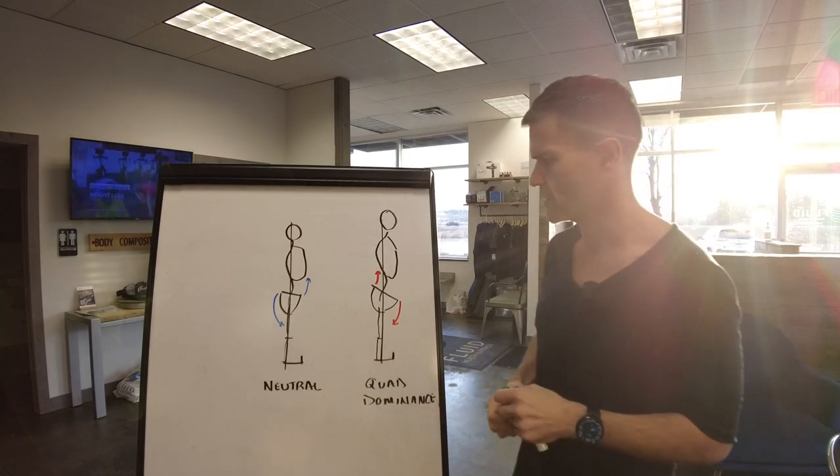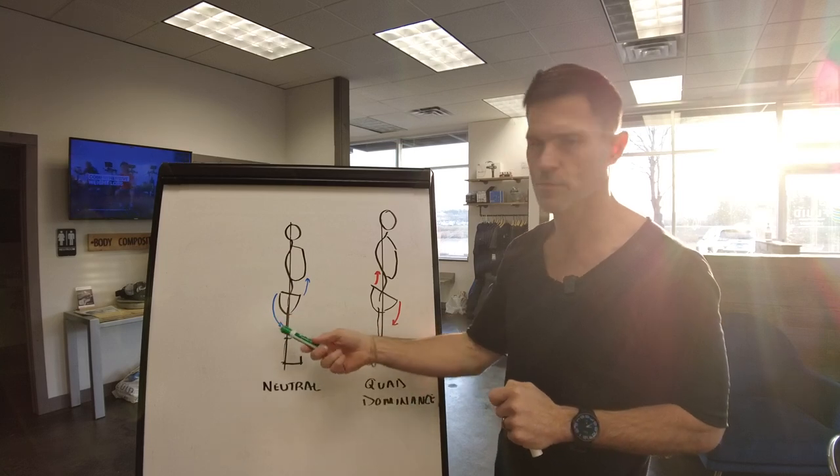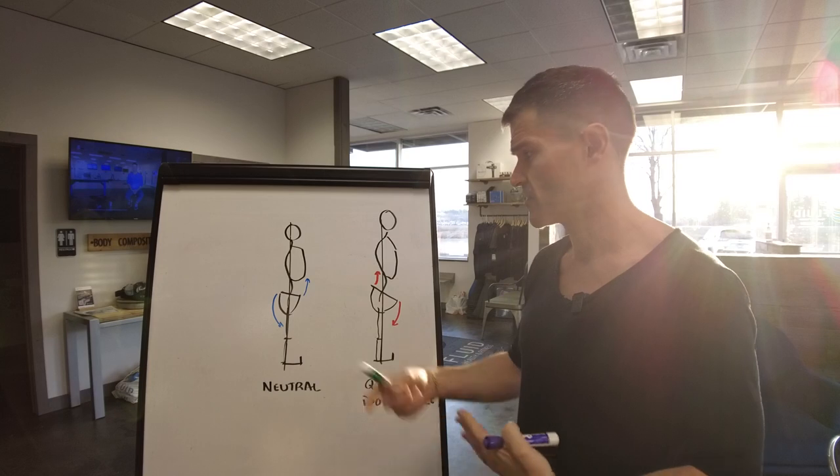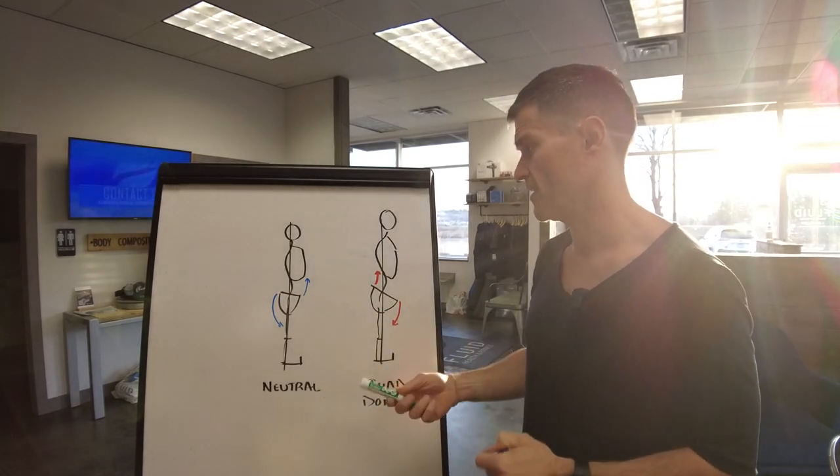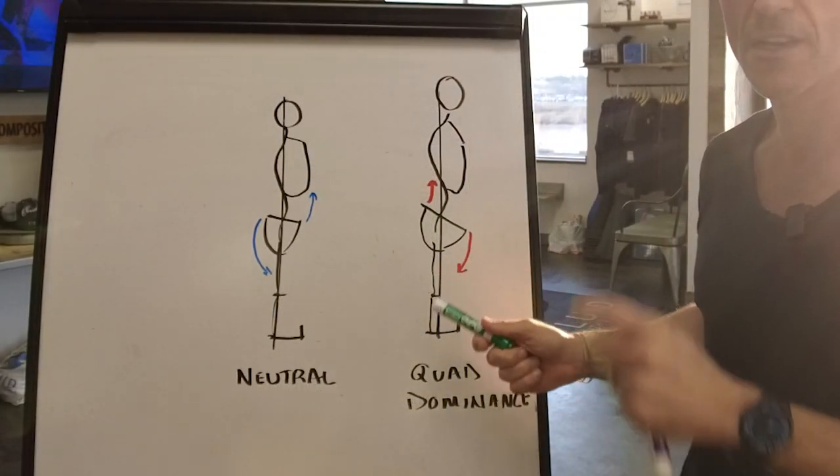Oftentimes we don't have sufficient abdominal control, so it doesn't support the glute and hamstring. They're left to do all the work, which makes them biased towards stability but underdeveloped and underutilized. So the body has a tendency to defer to the quad to produce power when you're running or doing athletic activities.